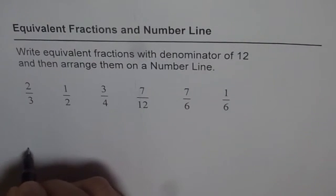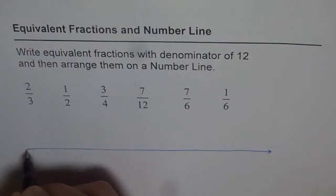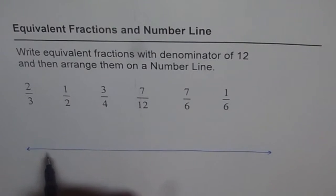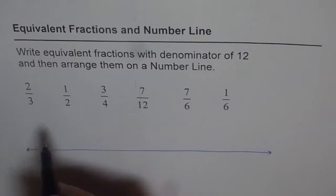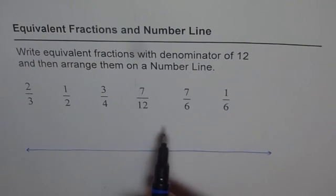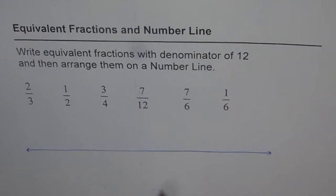A number line is something like this which extends all the way. Our numbers are positive, and since we are talking about fractions, most of them are less than 1. At times I may give you some numbers which are greater than 1, but most will be less than 1. We will try to put them on this number line.